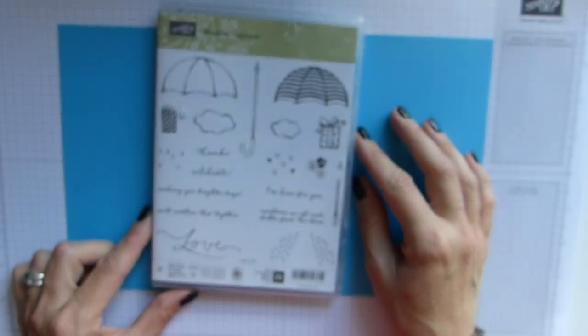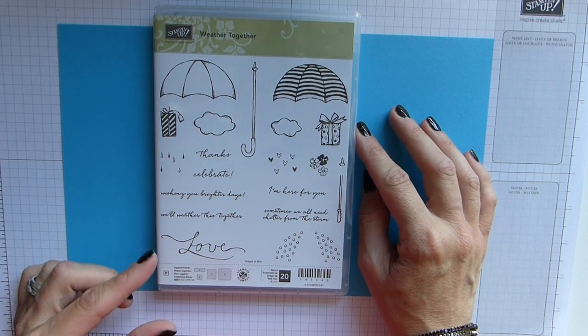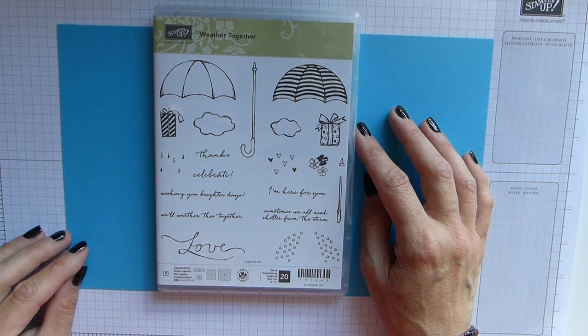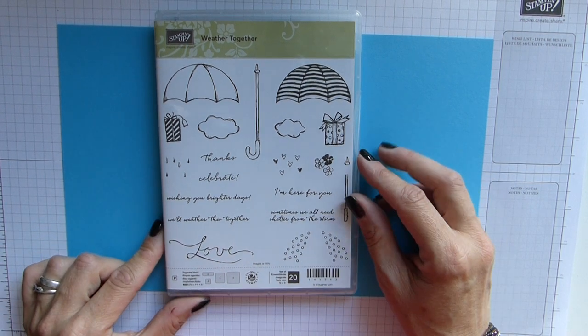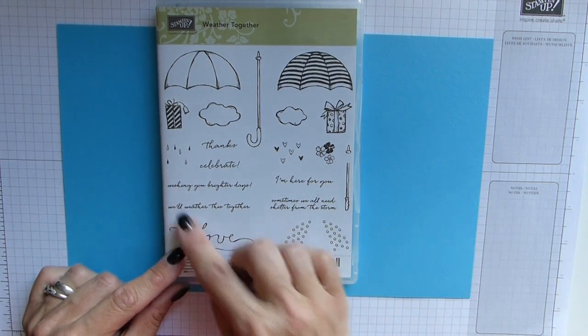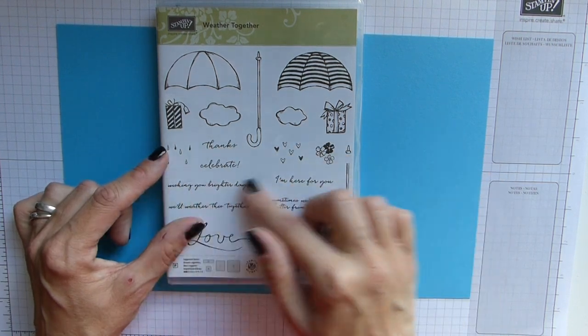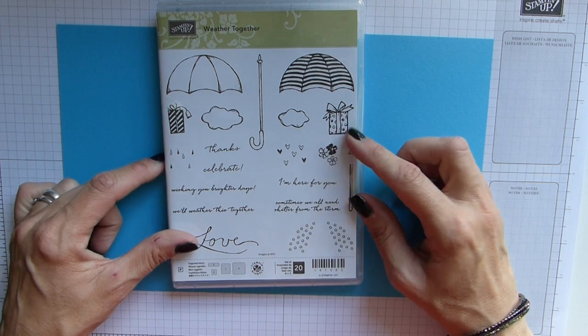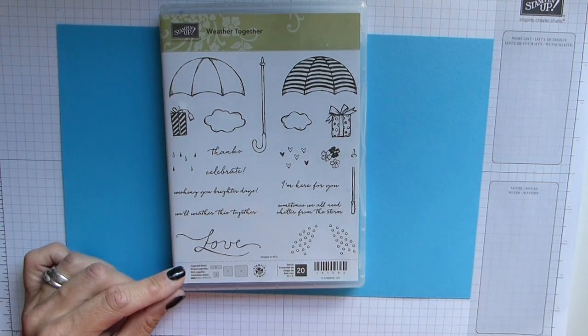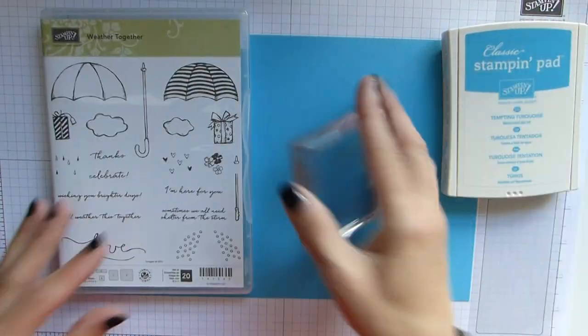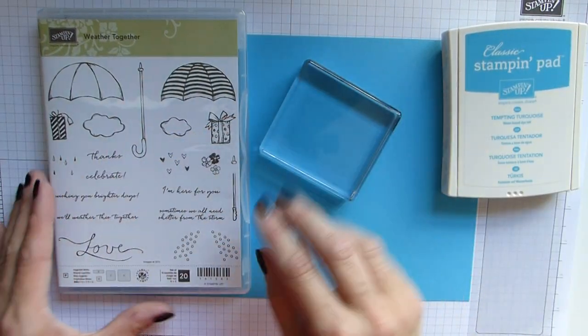Weather Together - I think this is a really lovely bundle. I love the fonts, I think they're really pretty. You have the choice between raindrops and hearts, there's presents. I just think that it's really cute, so that's why I chose this one.